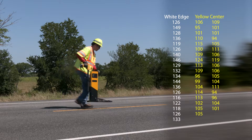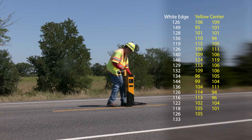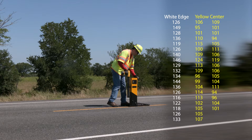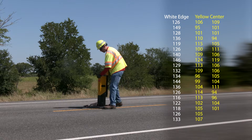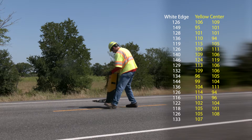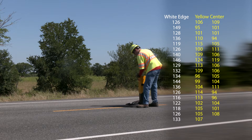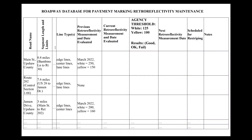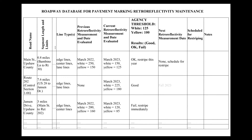Measurements for each line are averaged over each evaluation segment to determine the retro-reflectivity of the section. The measurements are then compared against agency retro-reflectivity threshold to determine where and when markings need to be replaced.